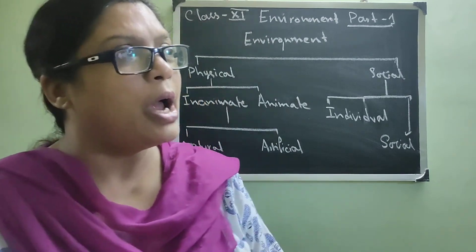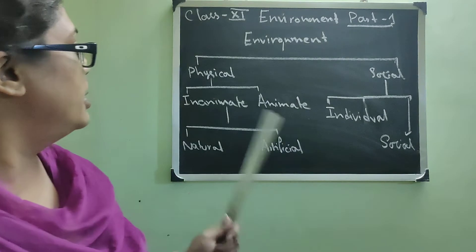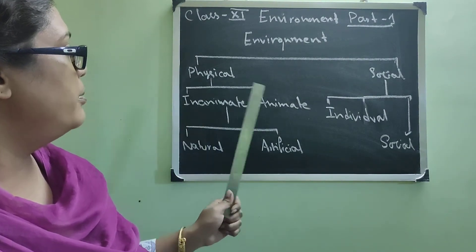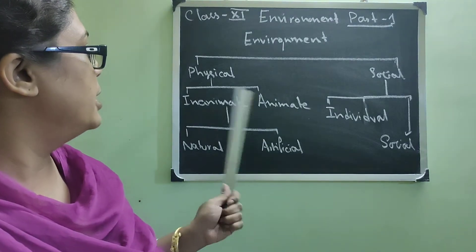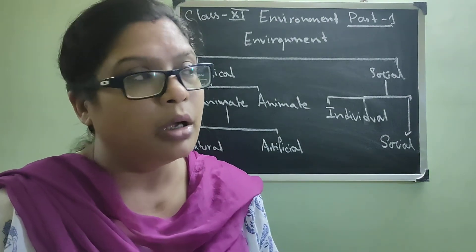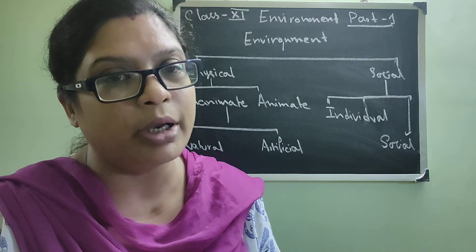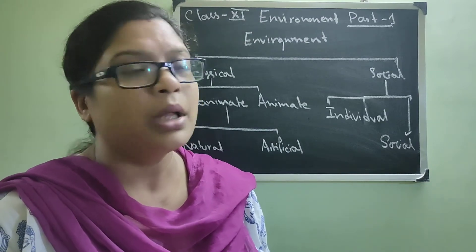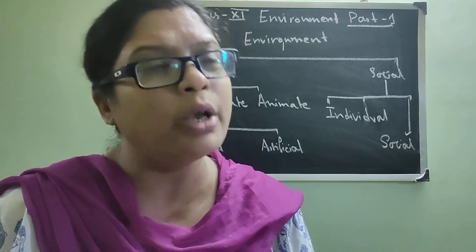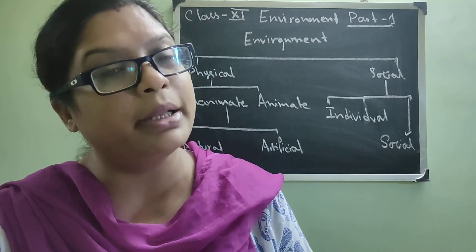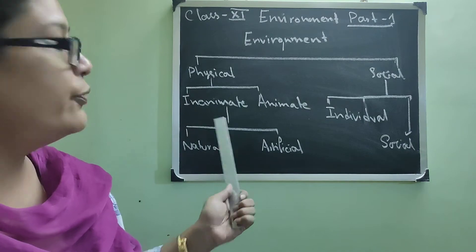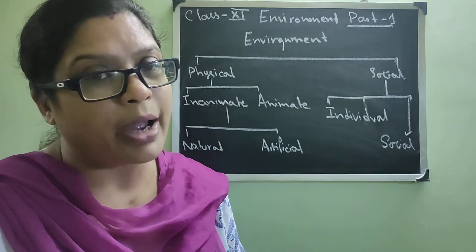Now if I discuss the physical environment, it can be divided into inanimated physical environment and animated physical environment. Inanimated physical environment includes all the non-living things which are surrounded by us like hail, mountain, sun, moon, day, night, rivers, whatever we are seeing in our environment. That is our physical environment. Now this includes the inanimated physical environment because these factors do not have life.